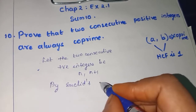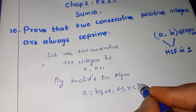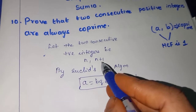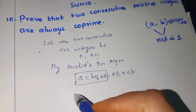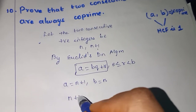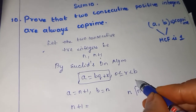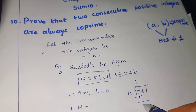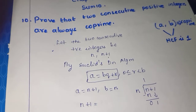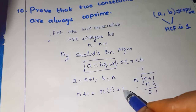Euclid's division algorithm states: A equals BQ plus R, where 0 is less than or equal to R and R is less than B. We have 2 consecutive positive integers. N plus 1 is the greater one, so A will be n plus 1 and divisor will be n. Dividing n plus 1 by n: 1 times n is n, and when you subtract, the remainder is 1.